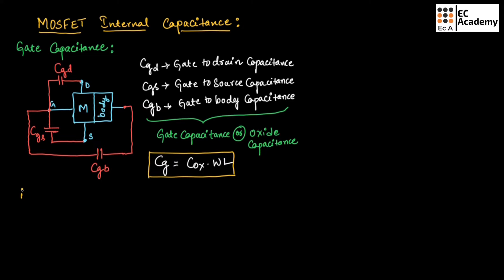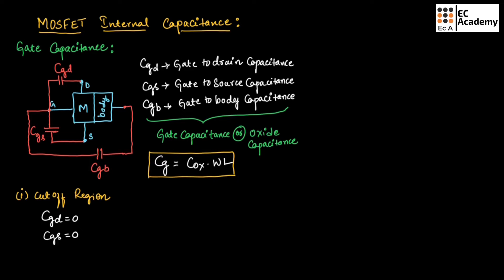First, let us consider the cutoff region. In cutoff region, the MOSFET will be off, so the junctions across gate-drain and gate-source will be reverse biased. The capacitances CGD and CGS will be equal to zero. The junction between gate and body will be forward biased, so we will get CGB equal to COX × WL.